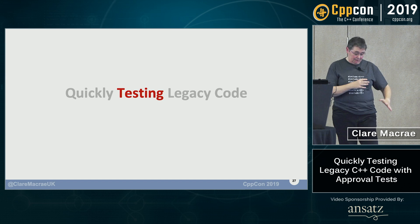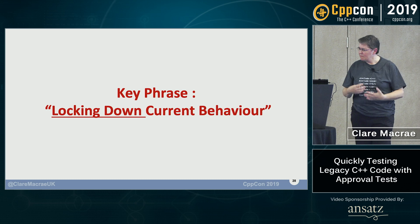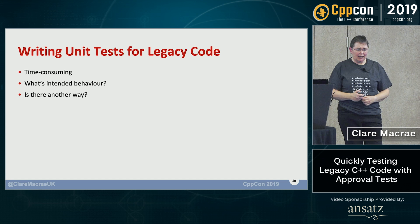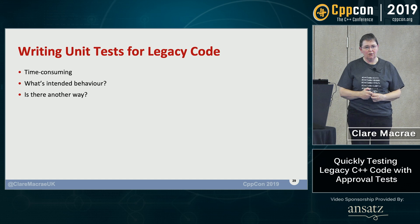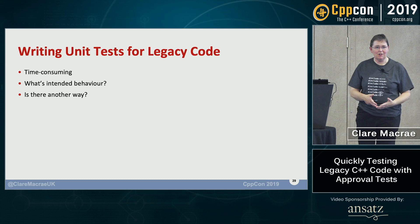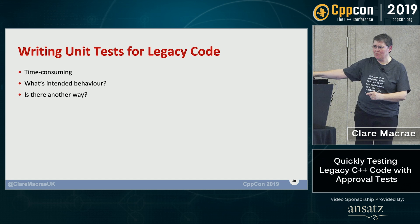By way of introducing testing of legacy code, a key phrase used in this area is 'locking down the current behavior' — capturing current behavior so we can repeat it and detect changes in future. It can be really time-consuming writing unit tests for legacy code. A big challenge is you may not even understand the intended behavior — you might write a test that casts in stone something unused, or something that was buggy but you got away with.